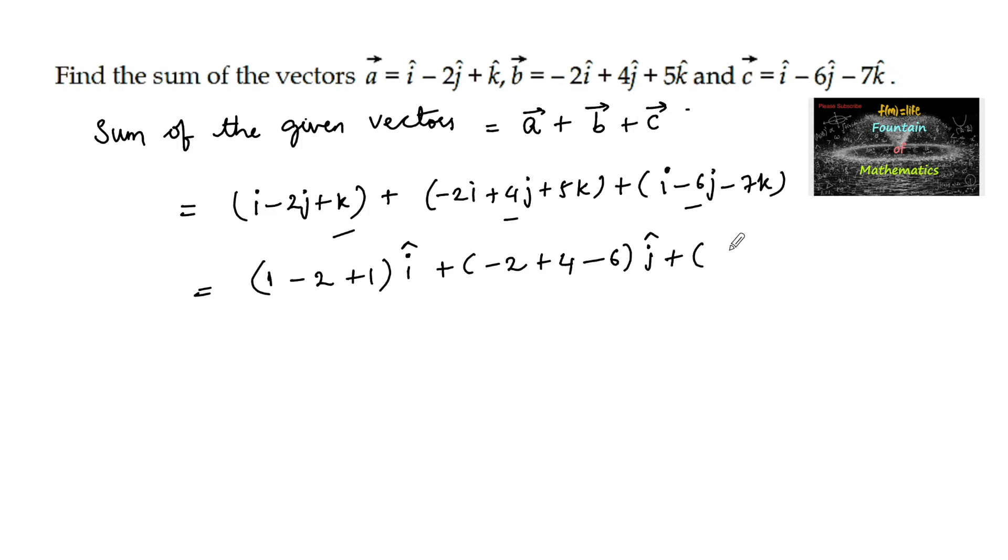So here 1 plus 5 plus minus 7, that is minus 7 of k cap.